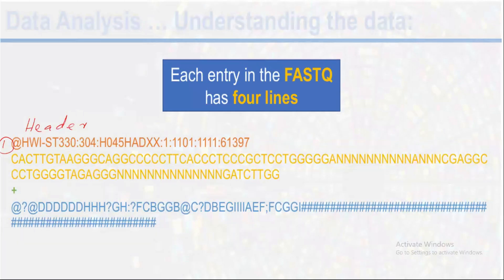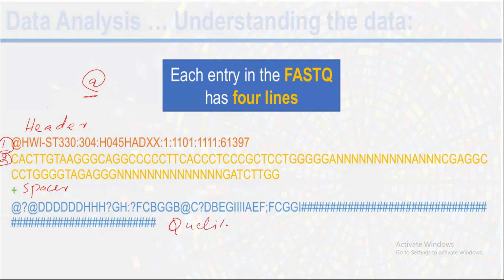The header starts with a specific symbol — the '@' symbol. So if someone asks you: inside a FASTQ file, what symbol does the header start with? You can say 'at the rate' (@). Line number two consists of the sequence. Line number three is basically a spacer (+). Line number four is basically the quality — the quality of each and every base.